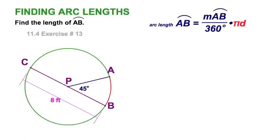Okay, we have a straightforward exercise here. We're given a diameter of 8 feet and we're finding the length of this red arc given a 45-degree angle. This is the formula we were given where the arc length of AB is equal to the measure of AB out of 360 times πD, which is the circumference. We're using πD because we know the diameter.